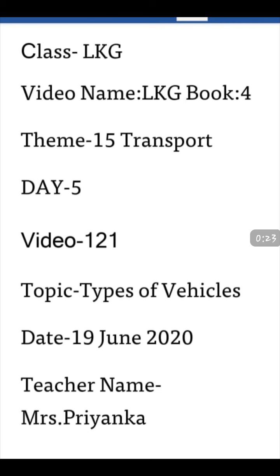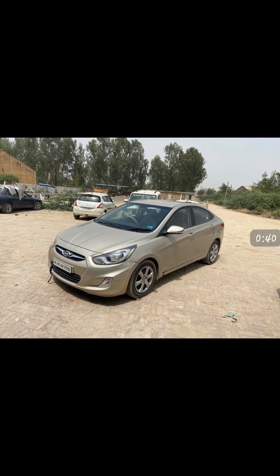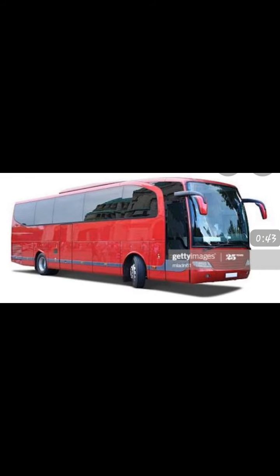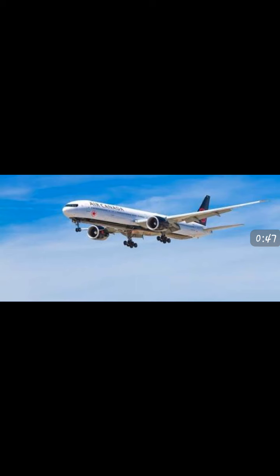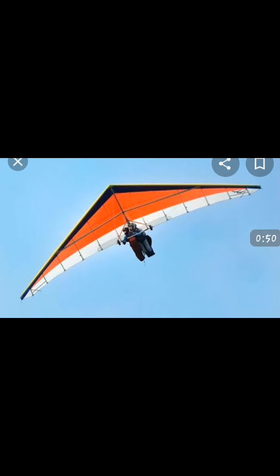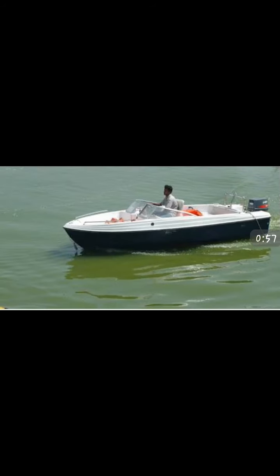We have already learned about water transport and land transport. Today we will revise the topic: kinds of vehicles. The topic for the day is kinds of vehicles — car, cycle, bus are land transports; aeroplane and glider are air transports; ship and boat are water transports. Students, call out the names of some vehicles of different kinds!